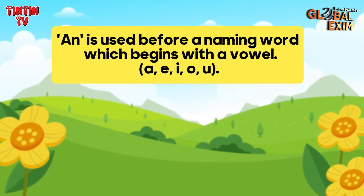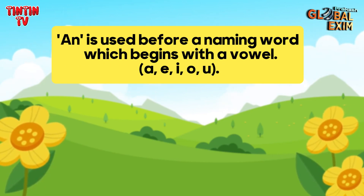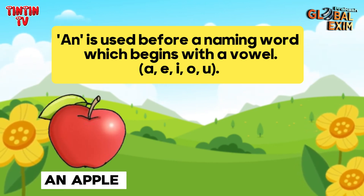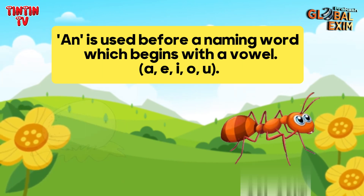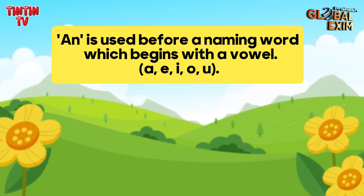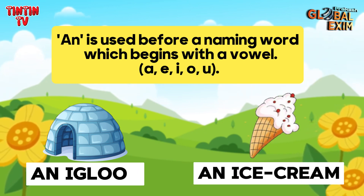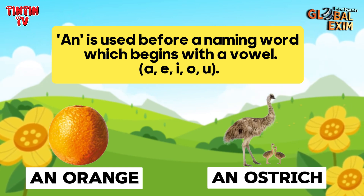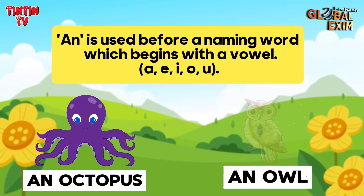AN is used before a naming word which begins with a vowel: A, E, I, O, U. Examples: an apple, an ant, an egg, an elephant, an igloo, an ice cream, an orange, an ostrich, an octopus, an owl.